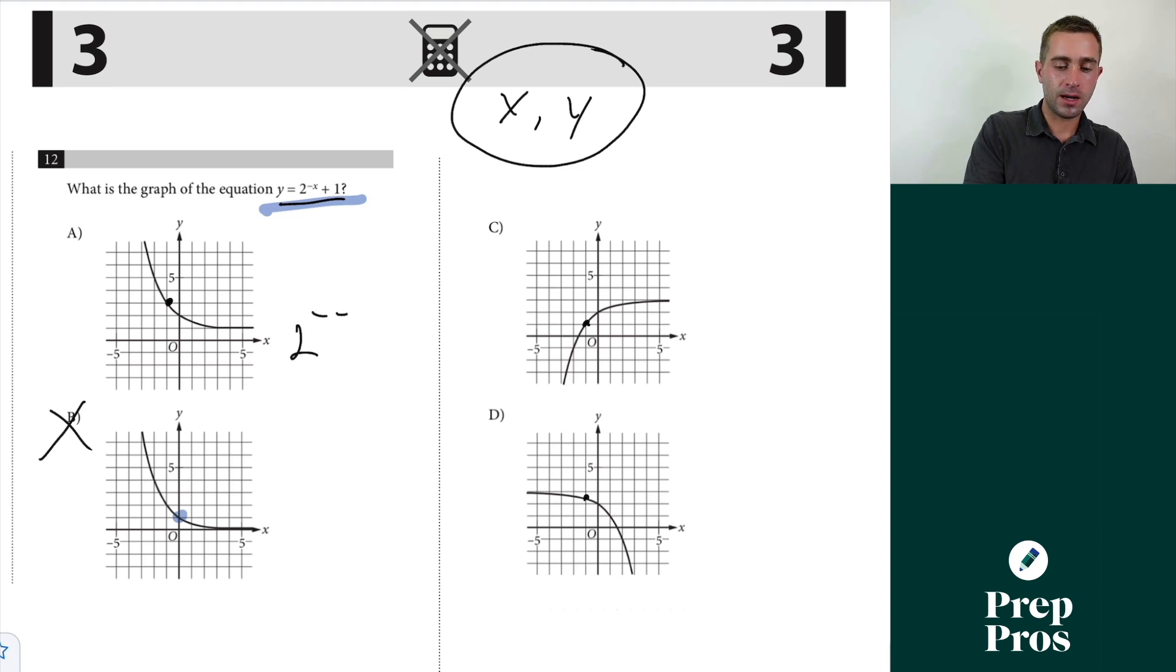Two to the negative negative one plus one is just same as two to the first plus one. What this tells me is when I plug negative one in I need to get a y value of three. Well at this point I can tell that a is my correct answer.